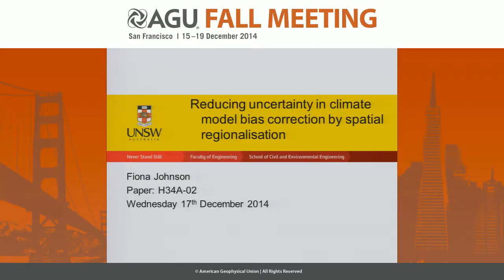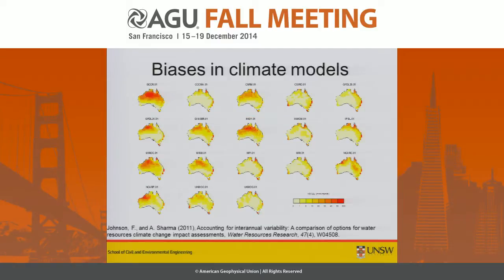Hi everyone. Today what I want to talk to you about is a way to reduce uncertainty in climate model bias correction by considering space. I've spent about five or six years thinking about how we can correct biases in climate models, particularly in precipitation.